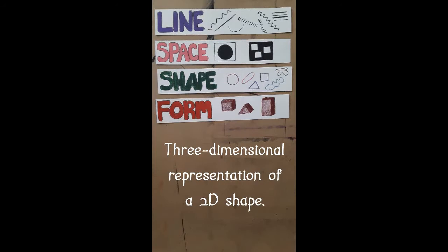Form refers to the 3D representation of a 2D shape. For example, the 3D representation of a square is a cube, and a circle would become a sphere.